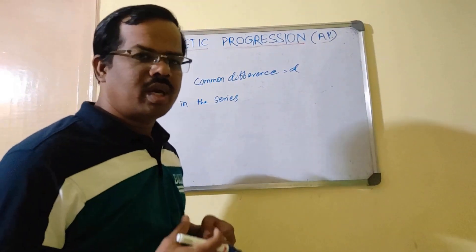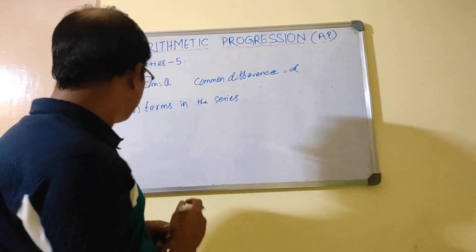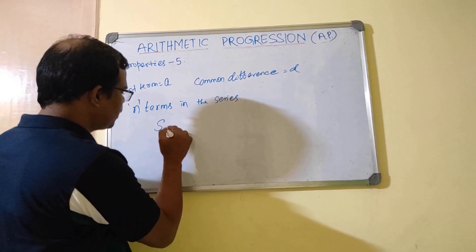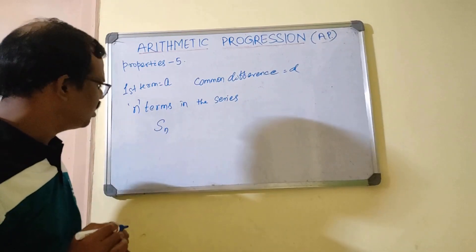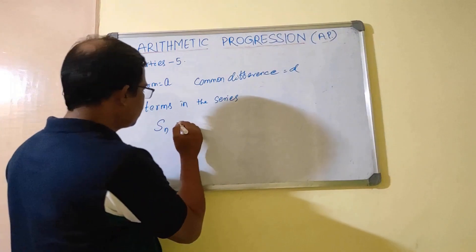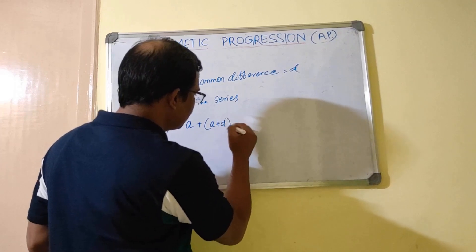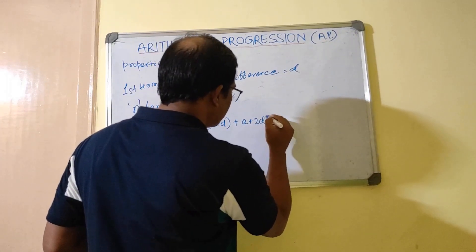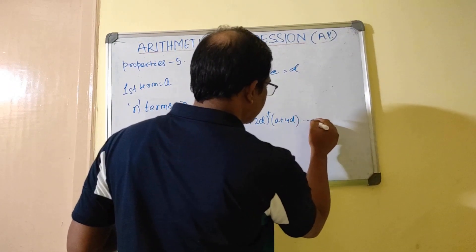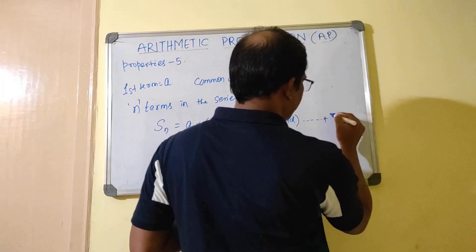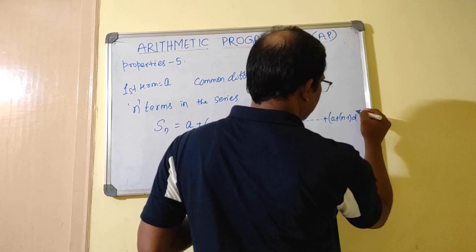Now we come to another property, which is for the sum of the series — a very important one. The sum is represented as S-n, where n is the number of terms. So S-n equals the sum of: a, plus (a plus d), plus (a plus 2d), plus (a plus 4d), and so on, up to a plus (n minus 1)d as the last term.